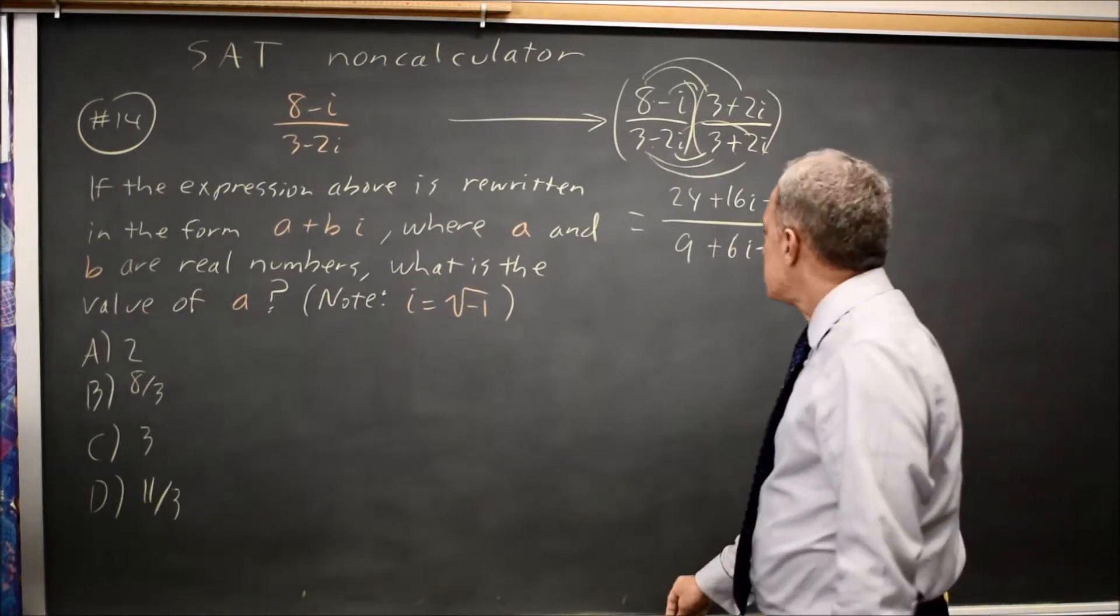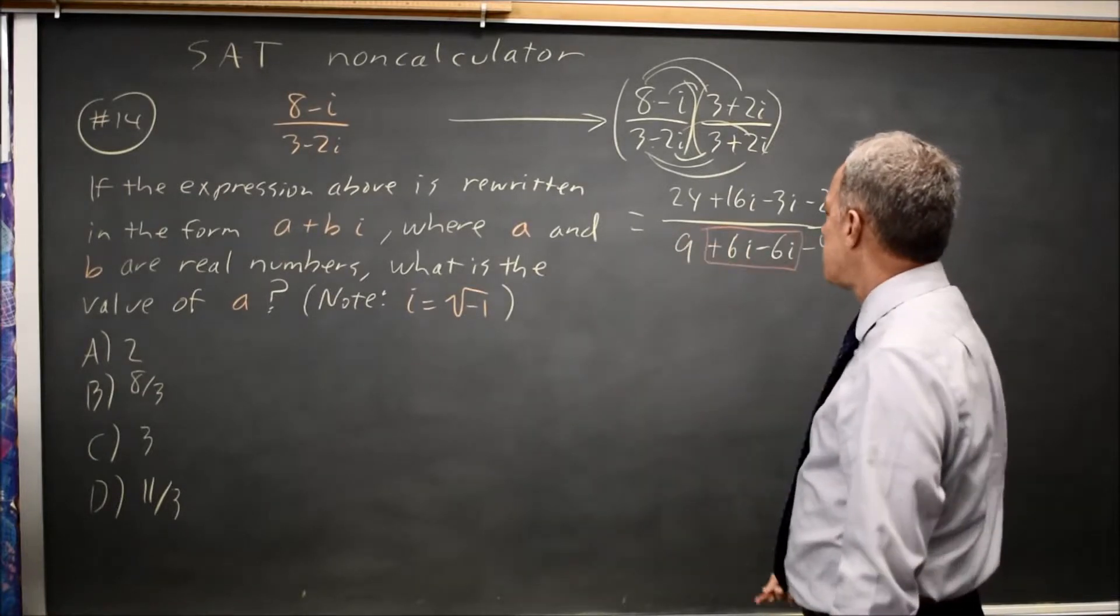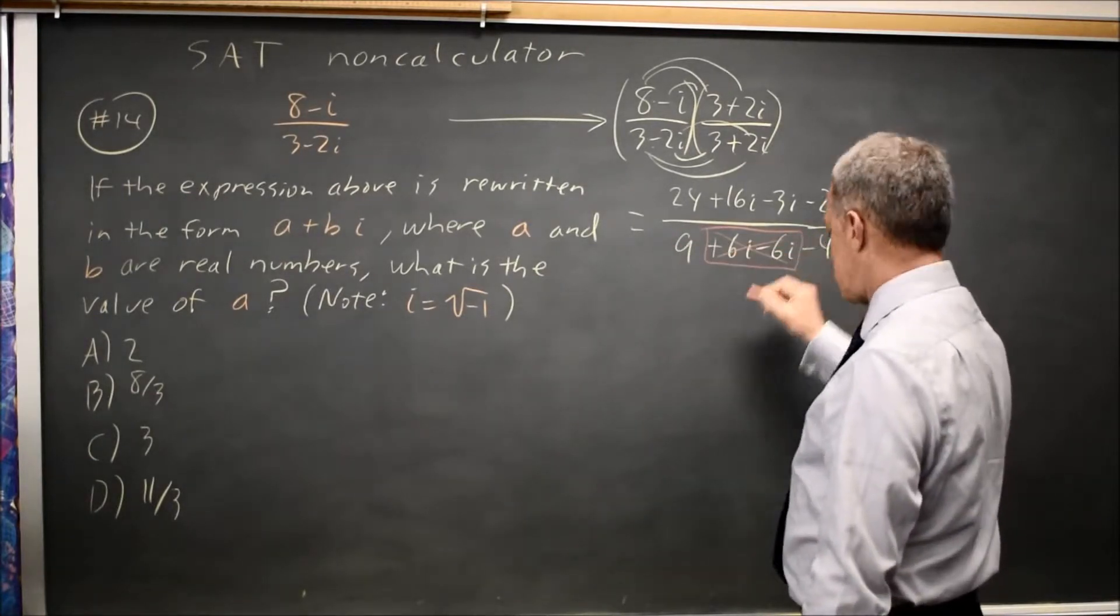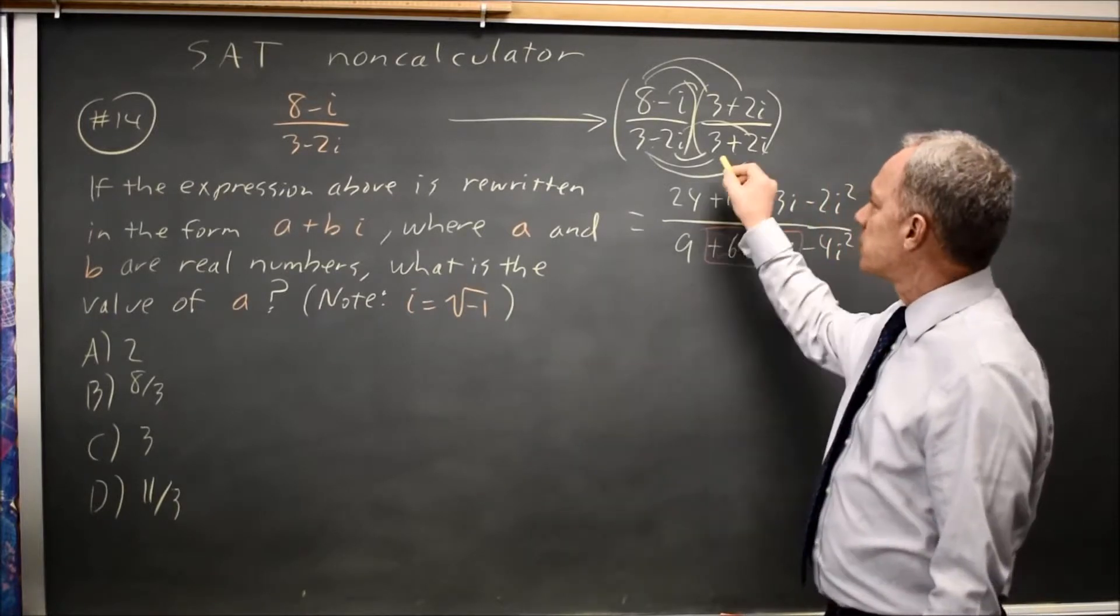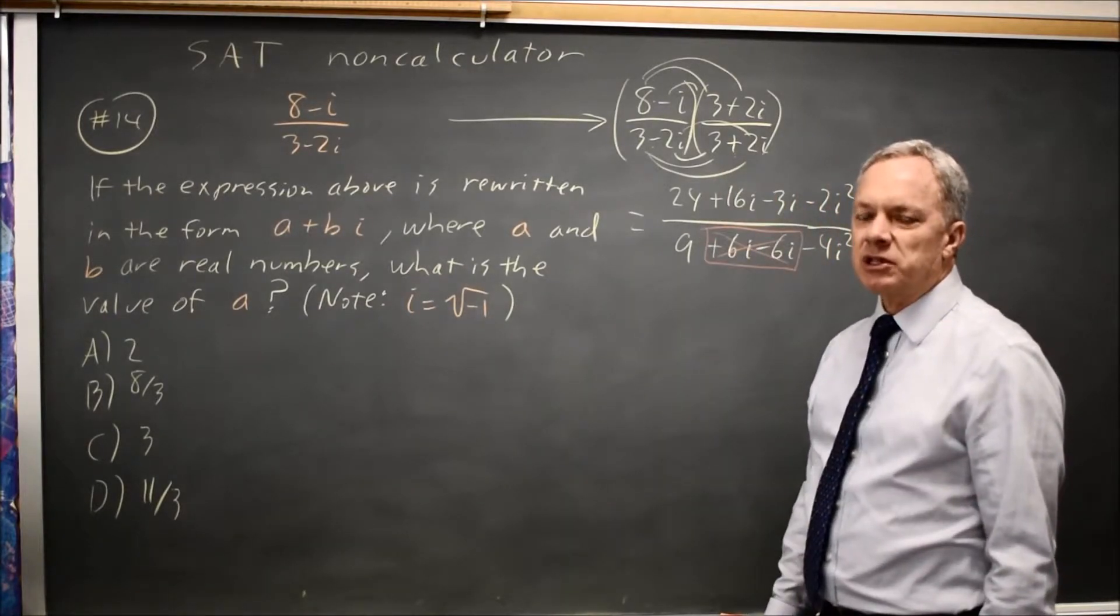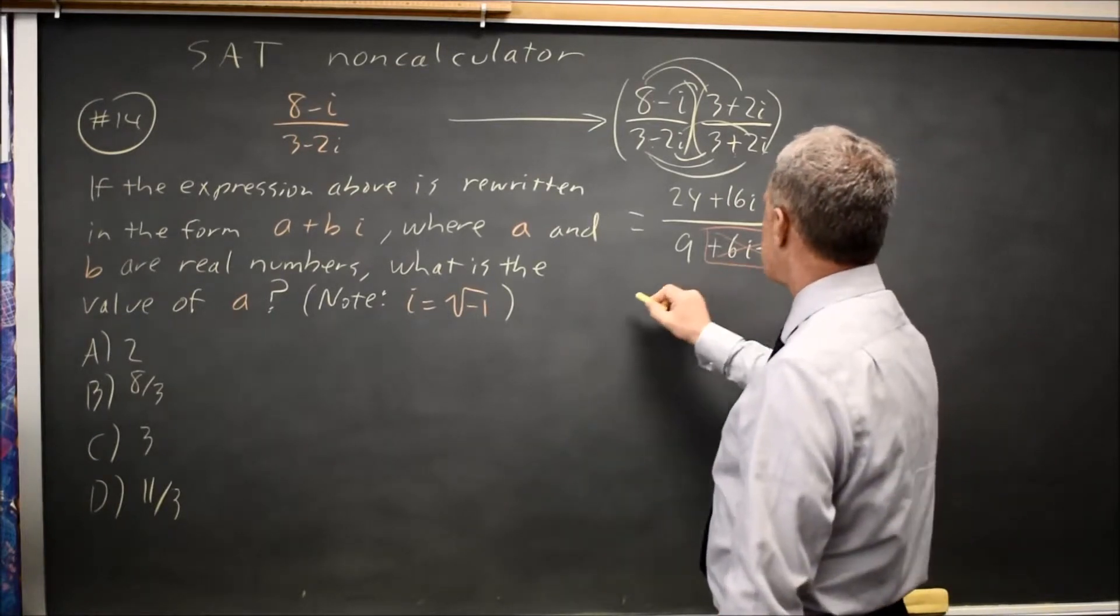We notice that the imaginary part of the denominator, 6i minus 6i, is 0. That's the reason we chose the complex conjugate. If you correctly multiply by the conjugate, you will get an expression with no pure imaginary part.